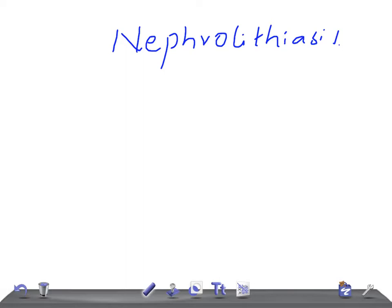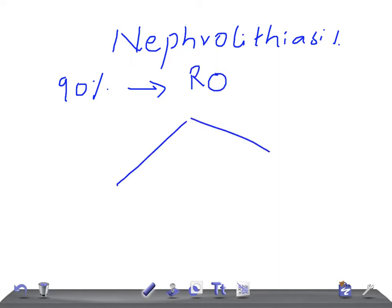Remember, 90% of renal stones or kidney stones are radio opaque. So we have two types: radio lucent (RL) and radio opaque. We know that 90% of patients with renal stones have radio opaque stones.